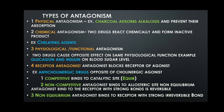There are various types of antagonism. Physical antagonism is based on physical properties of the drugs. For example, charcoal absorbs alkaloids and prevents their absorption — they interact on the basis of physical state. Chemical antagonism is when two drugs react chemically to form an inactive product. An example is chelating agents used in poisonings to neutralize the toxic substance.